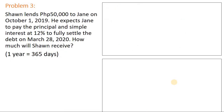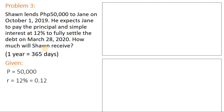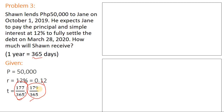Problem number three: Sean lends 50,000 pesos to Jane on October 1, 2019. He expects Jane to pay the principal and simple interest at 12% to fully settle the debt on March 28, 2020. How much will Sean receive? It's defined that one year is equal to 365 days, so this is exact interest. P is 50,000, r is 12% or 0.12. For approximate time from October 1, 2019 to March 28, 2020, the approximate number of days is 177, divided by 365. For actual time, that's 179 over 365.